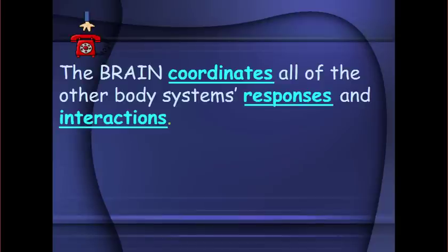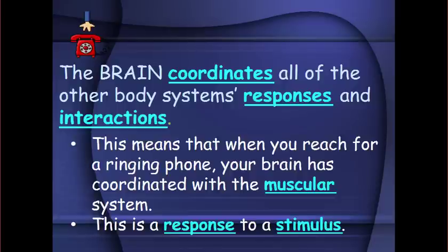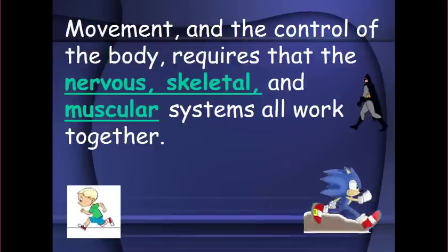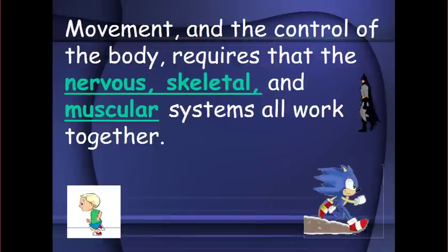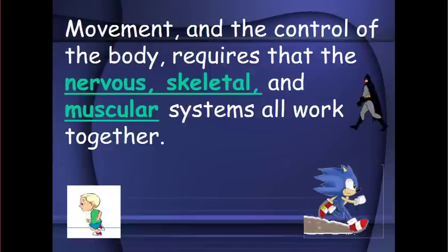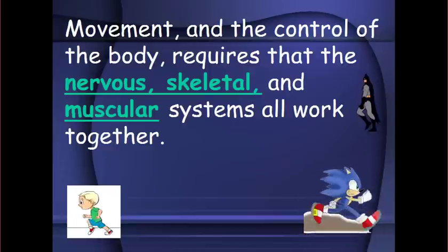The brain coordinates all the other body systems' responses and interactions. For example, when you reach for a ringing phone, the brain has coordinated with the muscular system — the stimulus is the phone ringing, and the response is your muscular movement to reach for it. Movement and control of the body requires the nervous system, skeletal system, and muscular system all working together, interacting through chemical signals and nervous impulses.